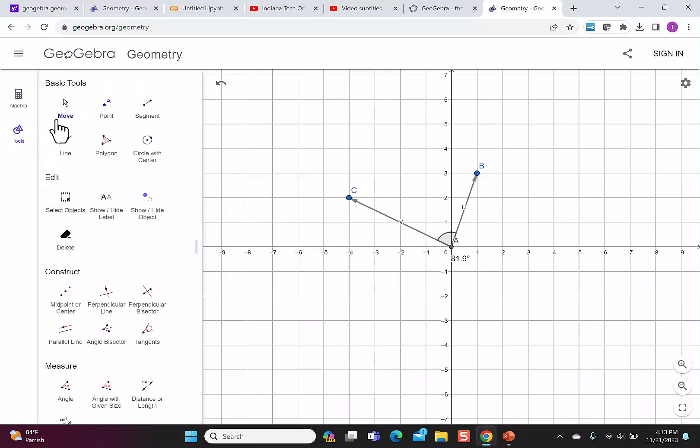You could also go back to the tools and go to move. On move, you can go over to a point and then actually move the point. As you move the point, you can see the degrees changing.